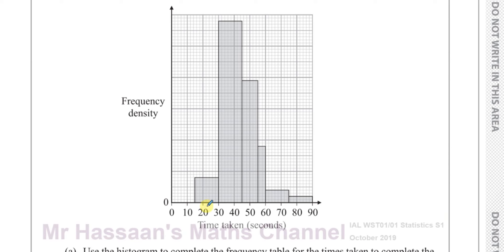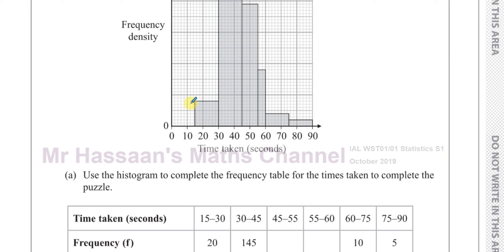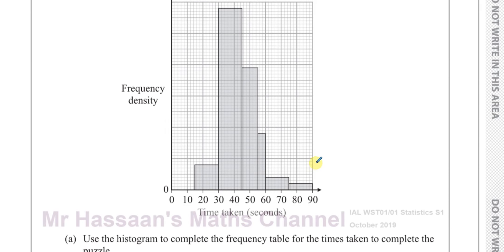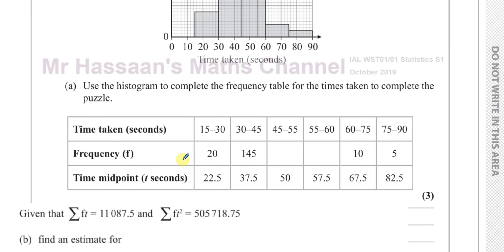One way of doing this is to look at the number of squares and figure out how much each square represents. That might be a hassle because some are like half squares. What might be better is to work out a scale for the frequency density by using the fact that frequency density equals frequency divided by the interval width.